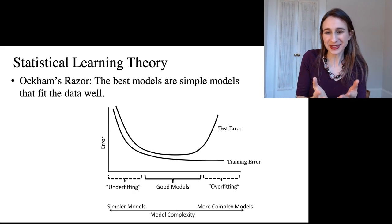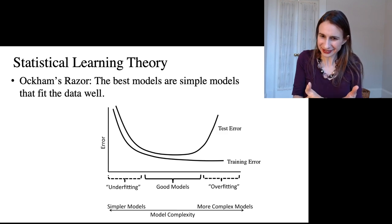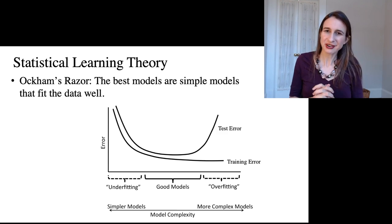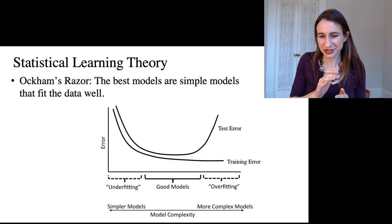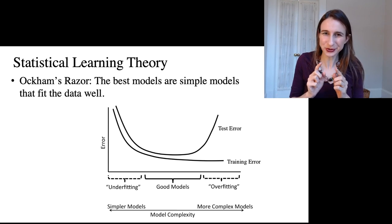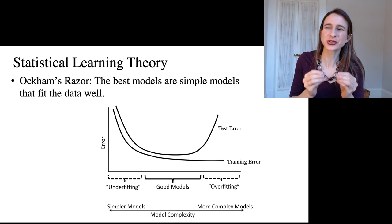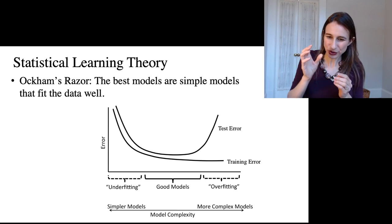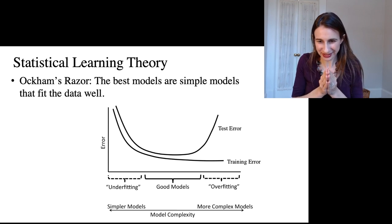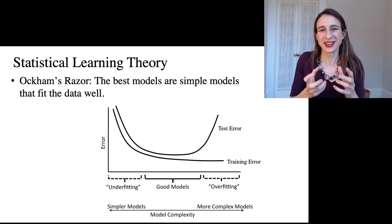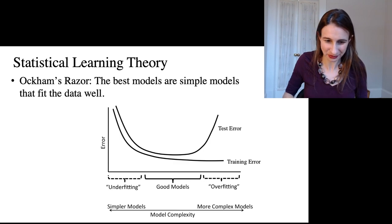And so the hope that this plot gives us is that there are a set of good models that fit well enough, that fit the training data well enough, but that the models are not so complex that they would overfit. And there's a sweet spot where you get good training error but also good test error. It's like the simplest model that fits the data well. That's what we're looking for.